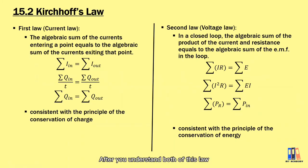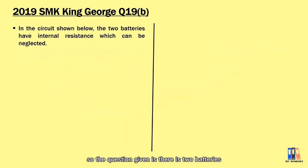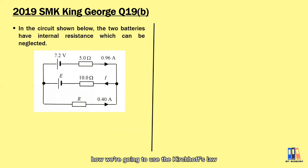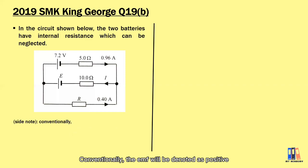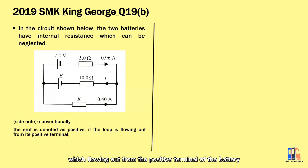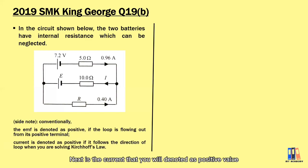Now we're going to look at a trial question from SMK King George, 2019. The question has two batteries with negligible internal resistance. Before solving, here are some conventions for applying Kirchhoff's loop rule: the EMF is denoted as positive if the loop flows out from its positive terminal, following conventional current flow. The current is denoted as positive if it follows the direction of the loop you defined.